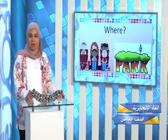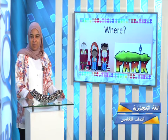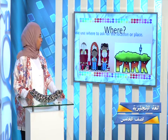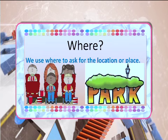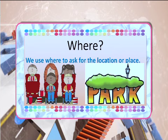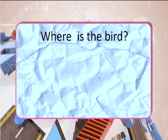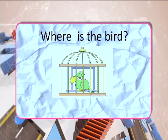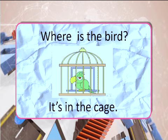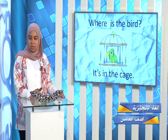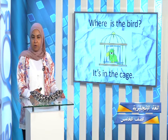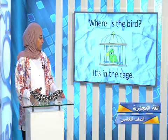Do you remember our song about the WH words? Now we have one of them: WHERE. We use 'where' to ask for the location or place — if we want to ask about our house, or where we are in the cinema, or in the park. For example: Where is the bird? We want to ask about the place, so we put 'where.' The answer is: It's in the cage. We used 'where' because we want to ask about a place.